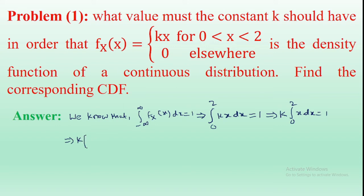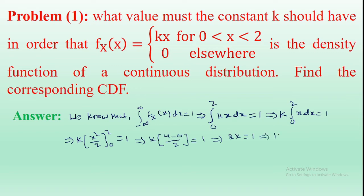The integral of x dx is x²/2, evaluated from 0 to 2, equals 1. Substituting the upper and lower values of x on the left-hand side, we get k times (2² − 0²)/2 = 1, which gives k times 4/2 = 1, so 2k = 1, therefore k = 1/2. The value of k is 1/2.